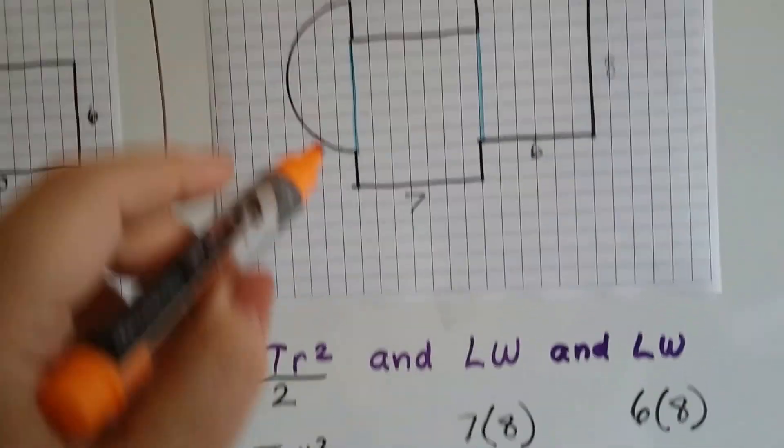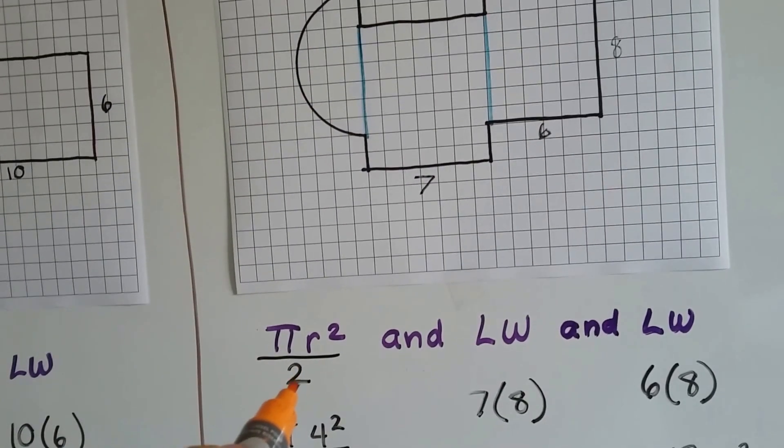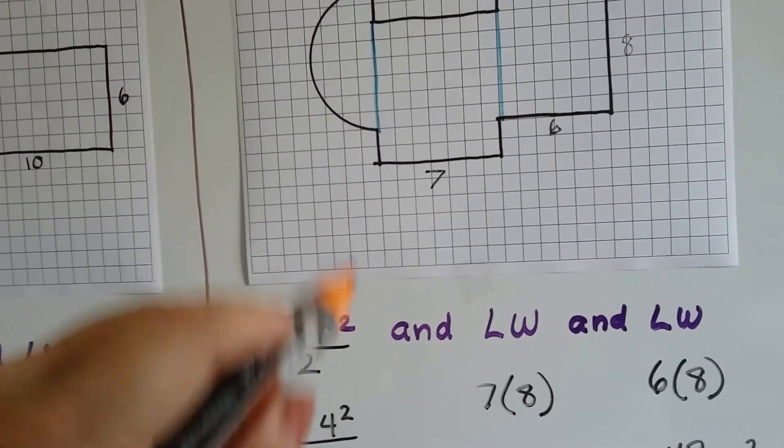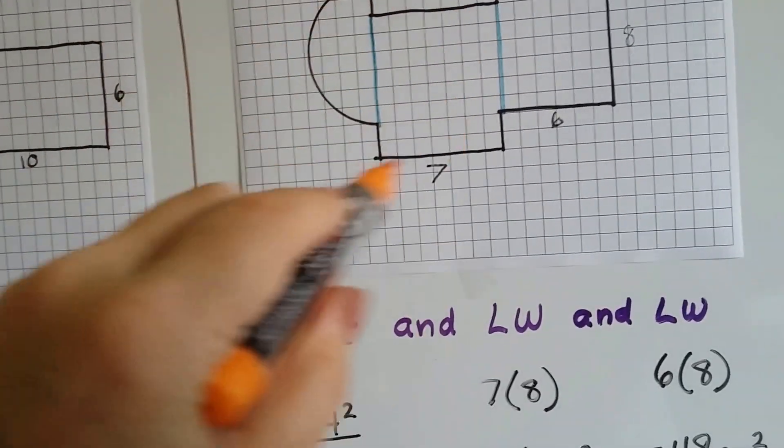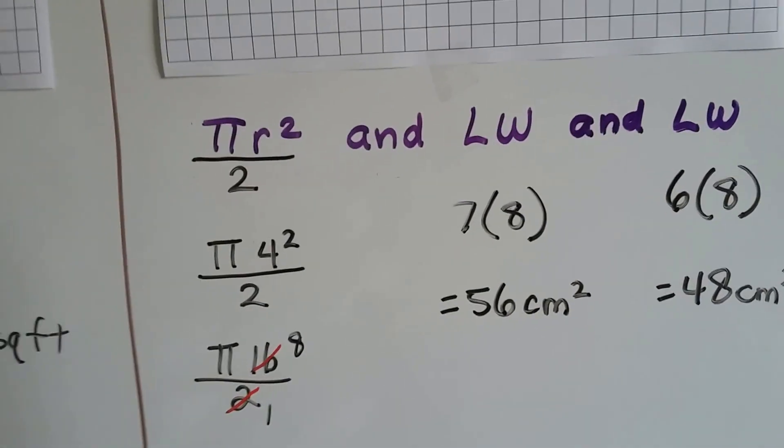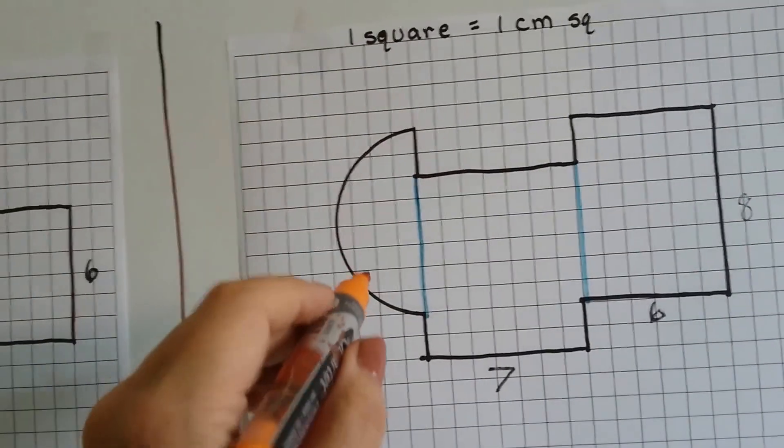Circles are pi r squared. But, because this is half of a circle, we need to divide that in 2. If we did this, just the numerator part, that would give us the area for an entire circle. We don't want that. We want a half circle. So, we're going to divide it by 2.